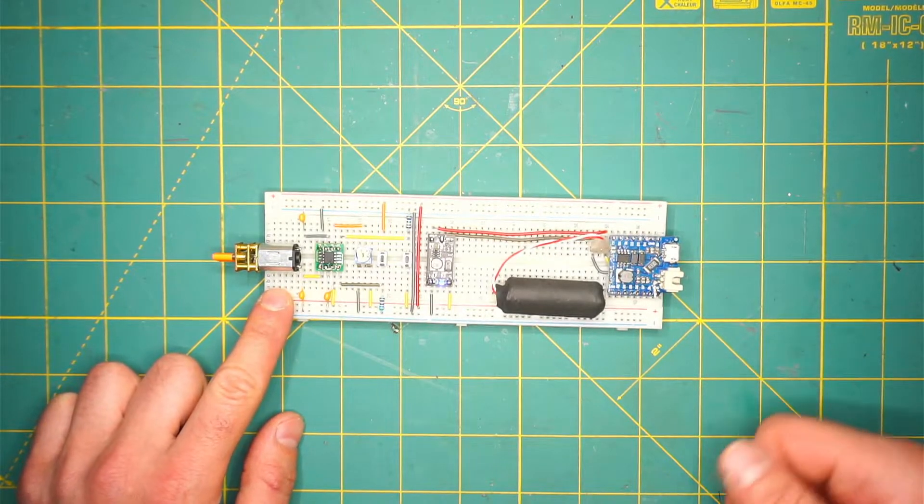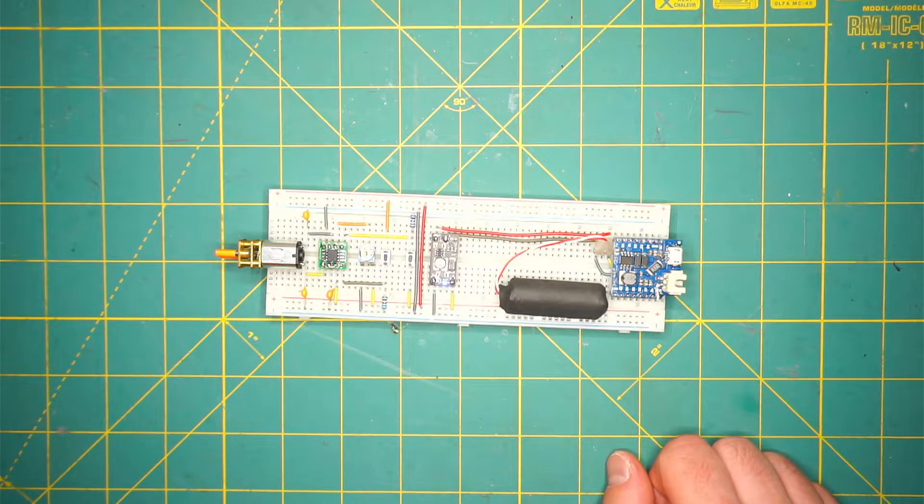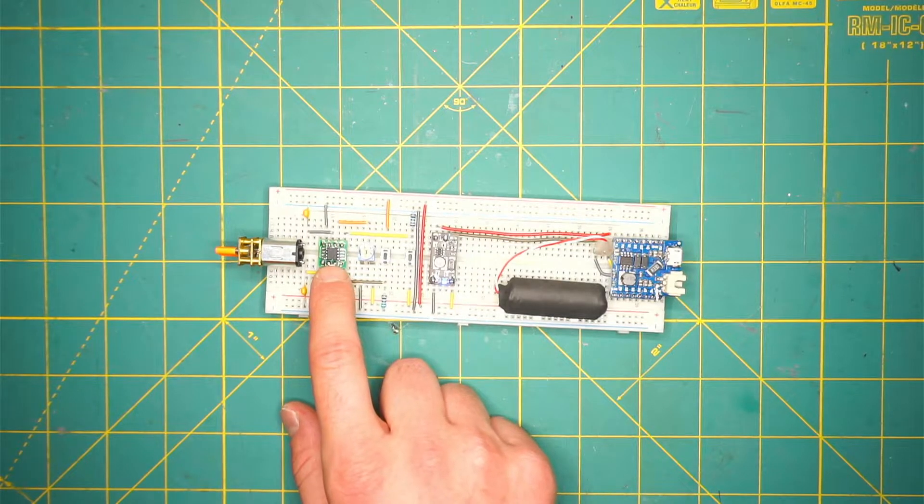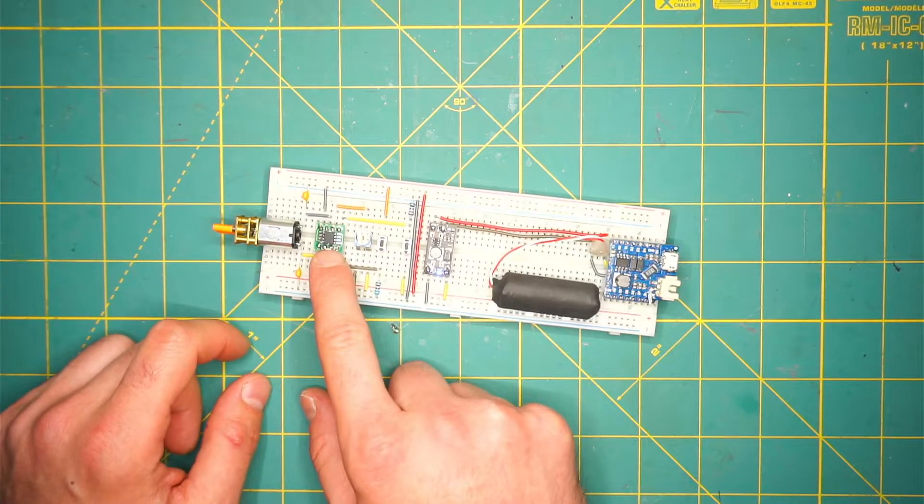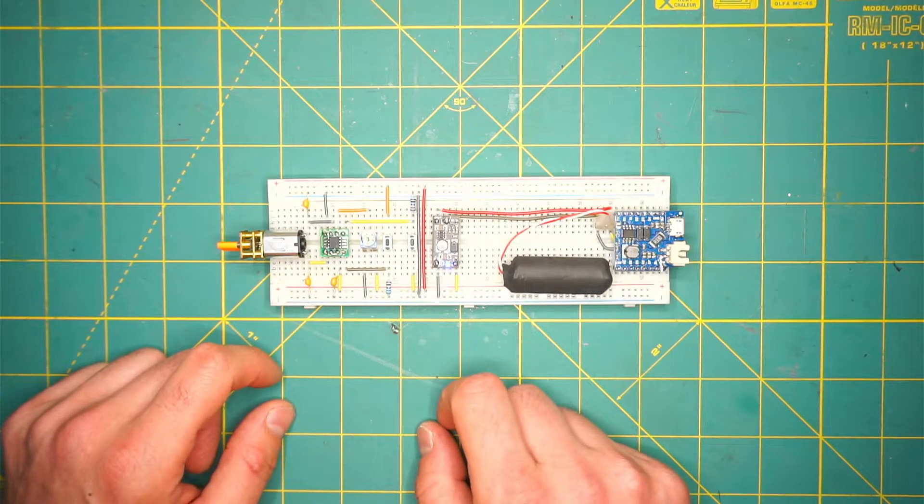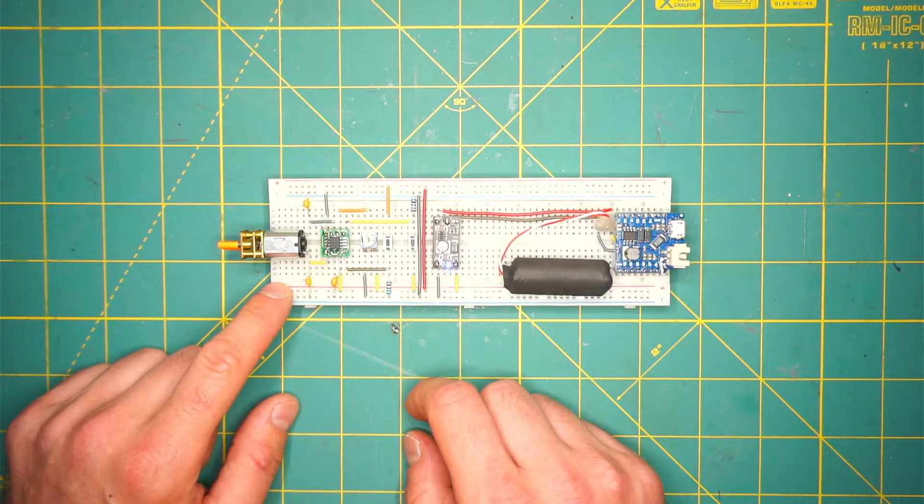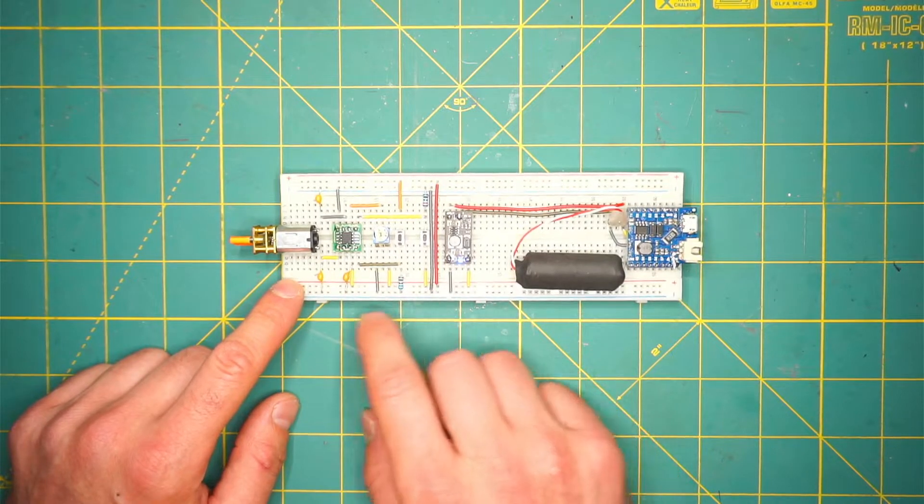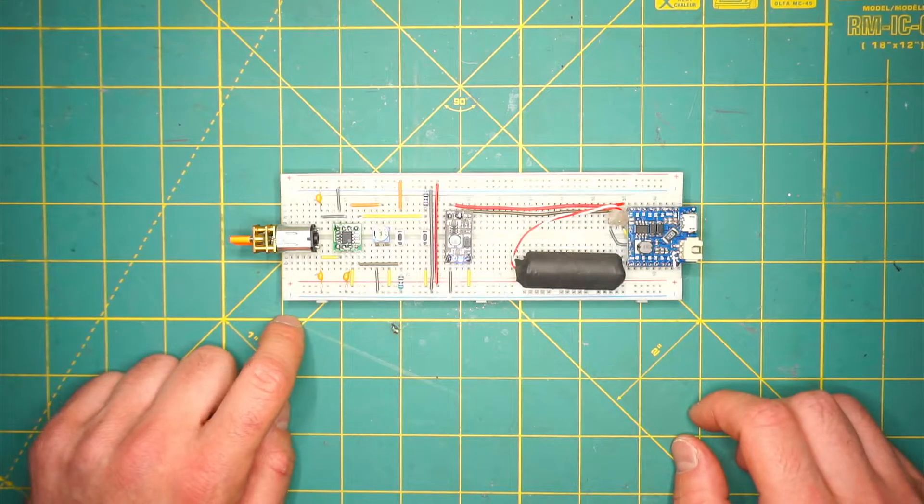The next thing is this IC, the BA6287F. It's a reversible motor driver for brushed motors, basically an H-bridge with two inputs to control the direction of the motor. This circuit is pretty much taken from the PDF for this IC.